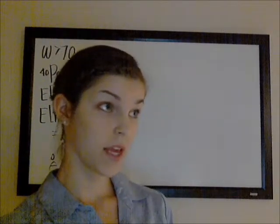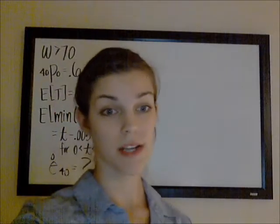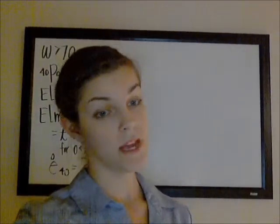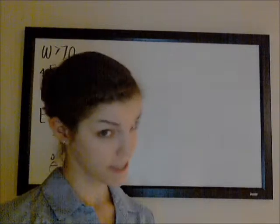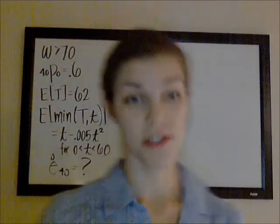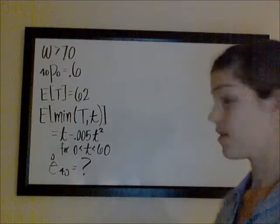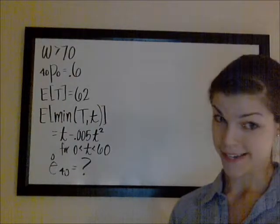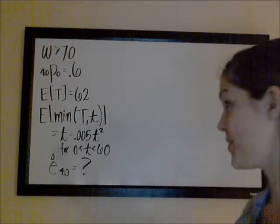Okay, I was reviewing recursive formulas for future lifetimes the other day and I came across a problem in my ASM manual, which I love. It's an SOA problem. It had some weird notation in it, so I'm going to share it with you and hopefully explain it well.